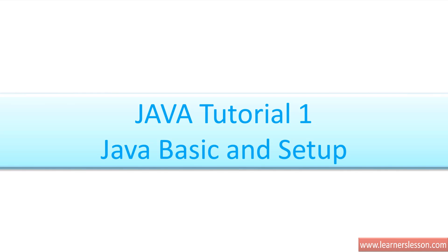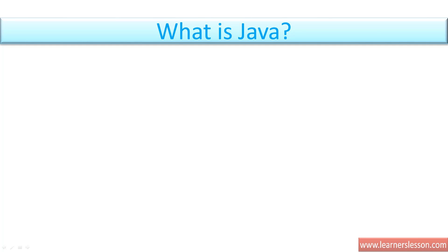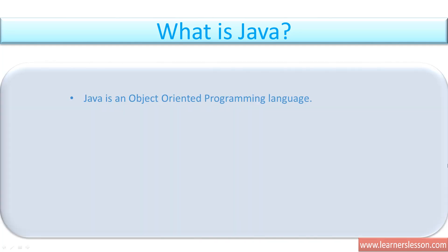So the first thing which comes into our mind is, what is Java? Java is a programming language, and at the same time it's object oriented. So what is an object oriented programming language? A language in which everything is considered to be an object. We will be learning more about it in the coming slides.